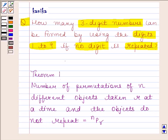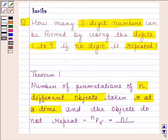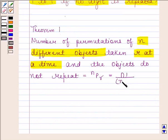n is the number of different objects and r is the number of objects taken at a time, and this nPr is equal to n factorial upon n minus r factorial.